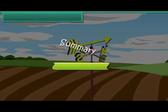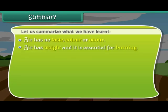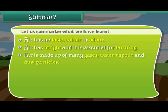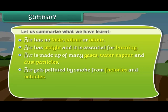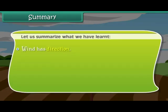Let us summarize what we have learned. Air has no taste, color, or odor. Air has weight and it is essential for burning. Air is made up of many gases, water vapor, and dust particles. Air gets polluted by smoke from factories and vehicles. Breathing polluted air causes respiratory diseases. Moving air is known as wind. Wind has direction, which is determined with the help of a wind vane.